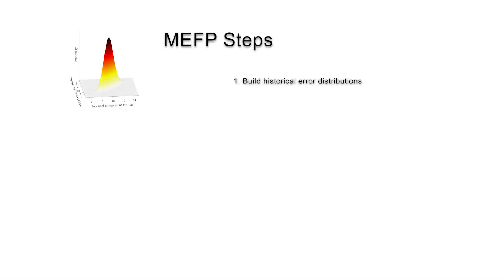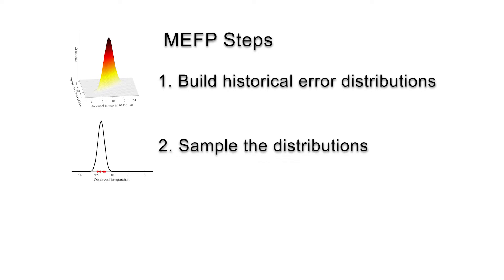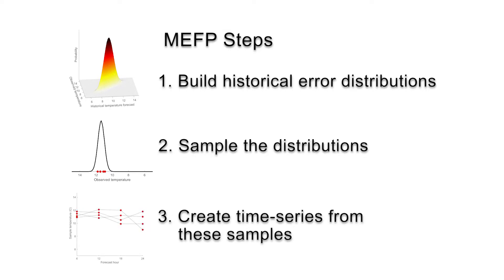To achieve this, the MEFP has three steps: build historical error distributions, sample these distributions based on the current single-valued meteorological forecast, and create forecast time series from these samples.